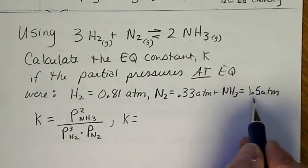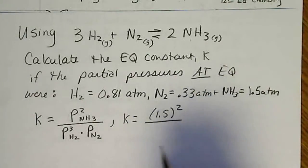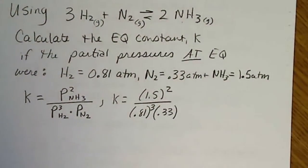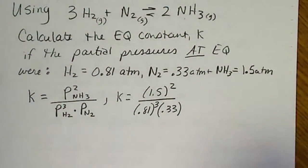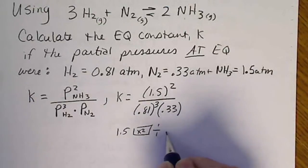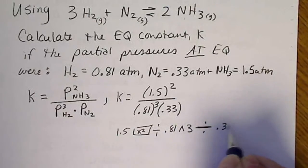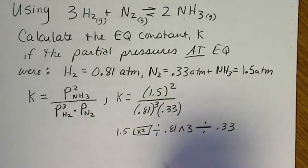So K equals ammonia is 1.5. We'll square that. And hydrogen is 0.81. We have to cube that number. And also in the denominator is 0.33. So the best way to enter this in the calculator with the fewest keystrokes would be 1.5, hit the X squared button, divide it by 0.81, raise it to the third power, and divide by 0.33. Both of those numbers are in the denominator.